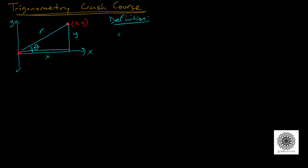From there we can define our trig functions based on that angle. Sine θ relates y over r — sometimes you hear this as opposite over hypotenuse — and it's important to remember these are right triangles. Cosine θ is x over r, the adjacent side over the hypotenuse. Tangent θ is y over x, or opposite over adjacent.